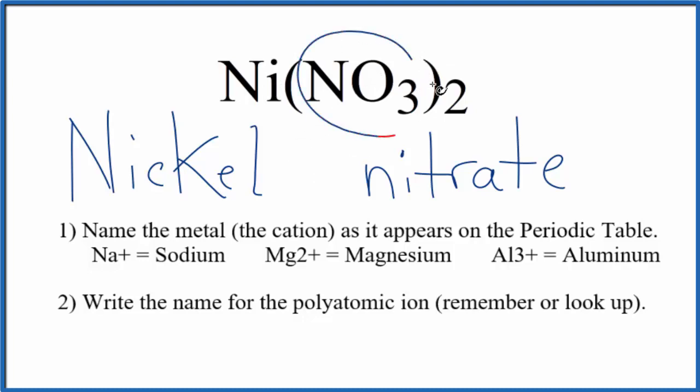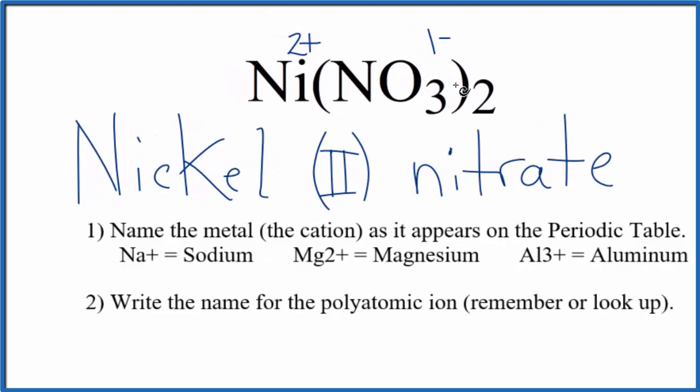The nitrate ion, the whole thing, has an ionic charge of 1 minus. And we have two of them. So 2 times 1 minus, that's 2 minus. Nickel has to be 2 plus for the charges to balance out, give us a net charge of 0. Since nickel is 2 plus, we put a Roman numeral II in parentheses. And that makes the name for Ni(NO₃)₂, nickel (II) nitrate.